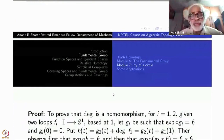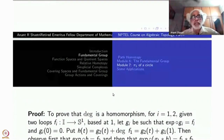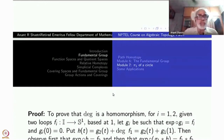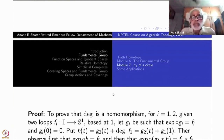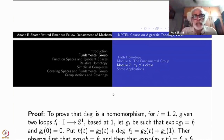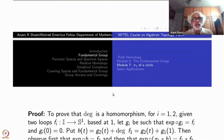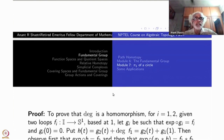To show that degree is a homomorphism, let us take two loops F1 and F2 based at 1. Let Gi be the path — a map into ℝ such that exponential composite Gi equals Fi — those are lifts such that their starting point is 0. Then G1(1) is degree of F1 and G2(1) is degree of F2. So what we have to show is that the sum of these is the degree of F1 star F2, the composition of paths inside S¹.